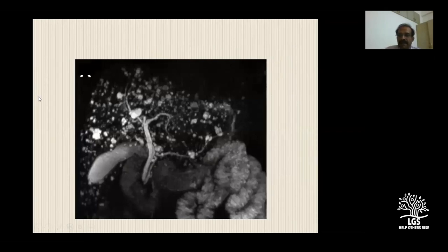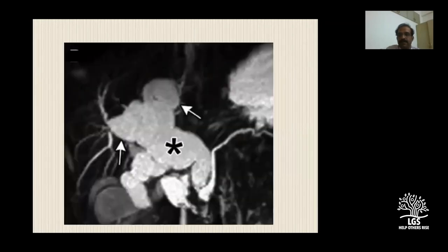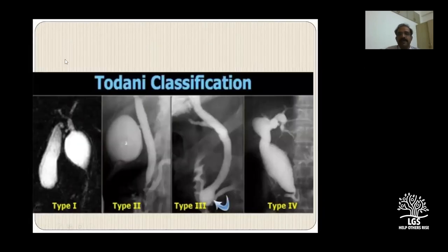For congenital abnormalities - this image looks like a starry sky. It's called Caroli's disease, where there is congenital dilatation of the biliary radicals. All these biliary radicals appear very bright on T2. Congenital conditions like choledochal cysts are also very well demonstrated on MRCP.